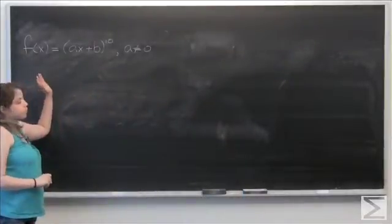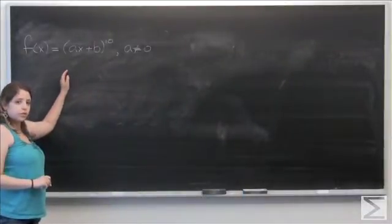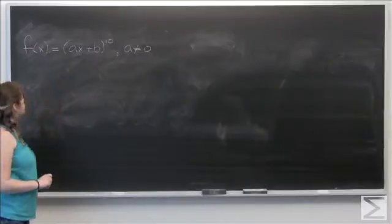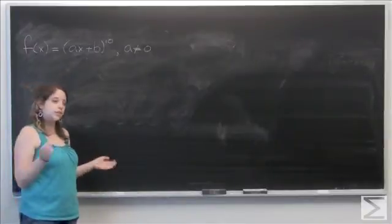We want to find points of x where the second derivative of this will equal 0. So the first thing we should do is take the second derivative.